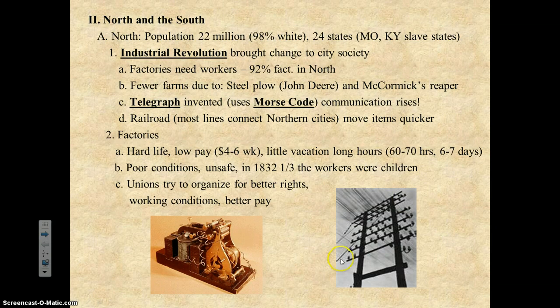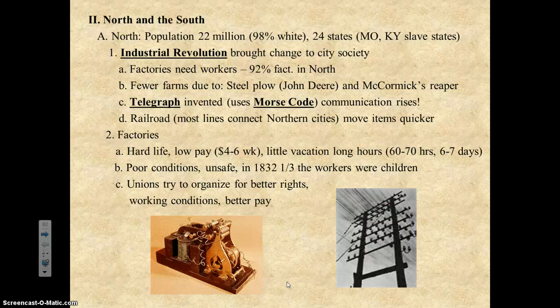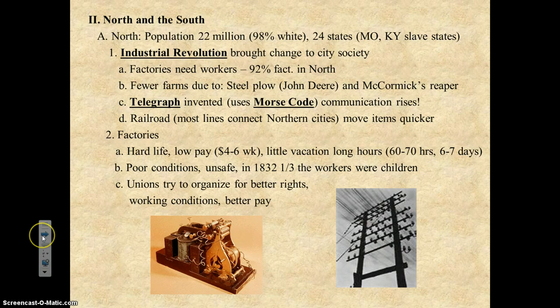Most of the factory workers — about a third of them — were actually children, because they could be paid less for the same work. Immigrants, children, and free African Americans in the North were the people who had these factory jobs. They feared slavery ending because it meant more competition for their already scarce jobs. Unions tried to organize to get better rights, better working conditions, and better pay.